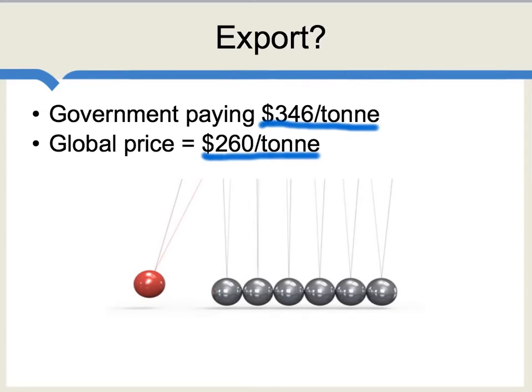You might also think: why doesn't the government just take the wheat and give it away to poorer Indians? And probably that's what they should do. But there are so many regulations on the distribution and procurement of wheat that this actually isn't nearly as easy as it should be.